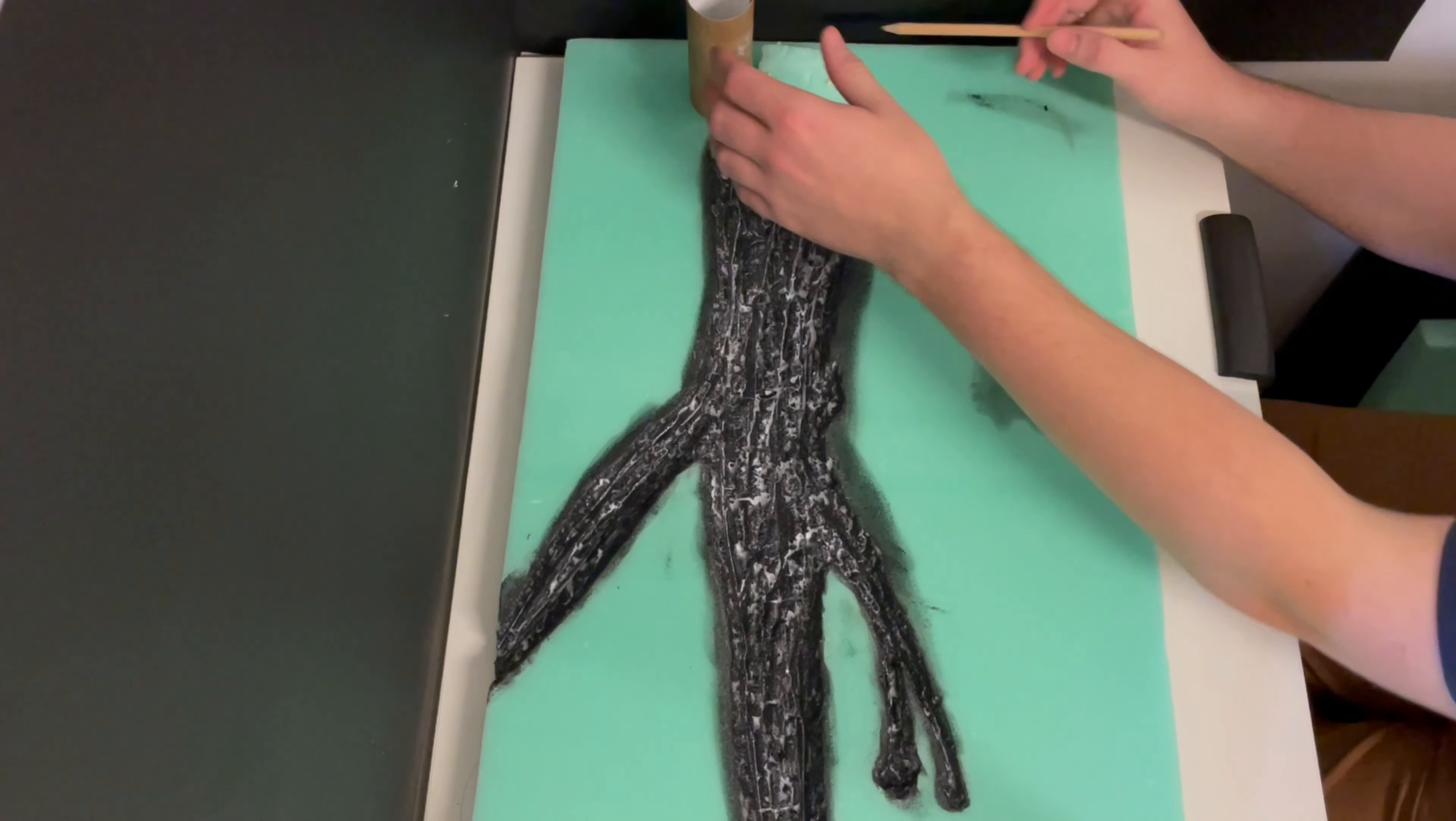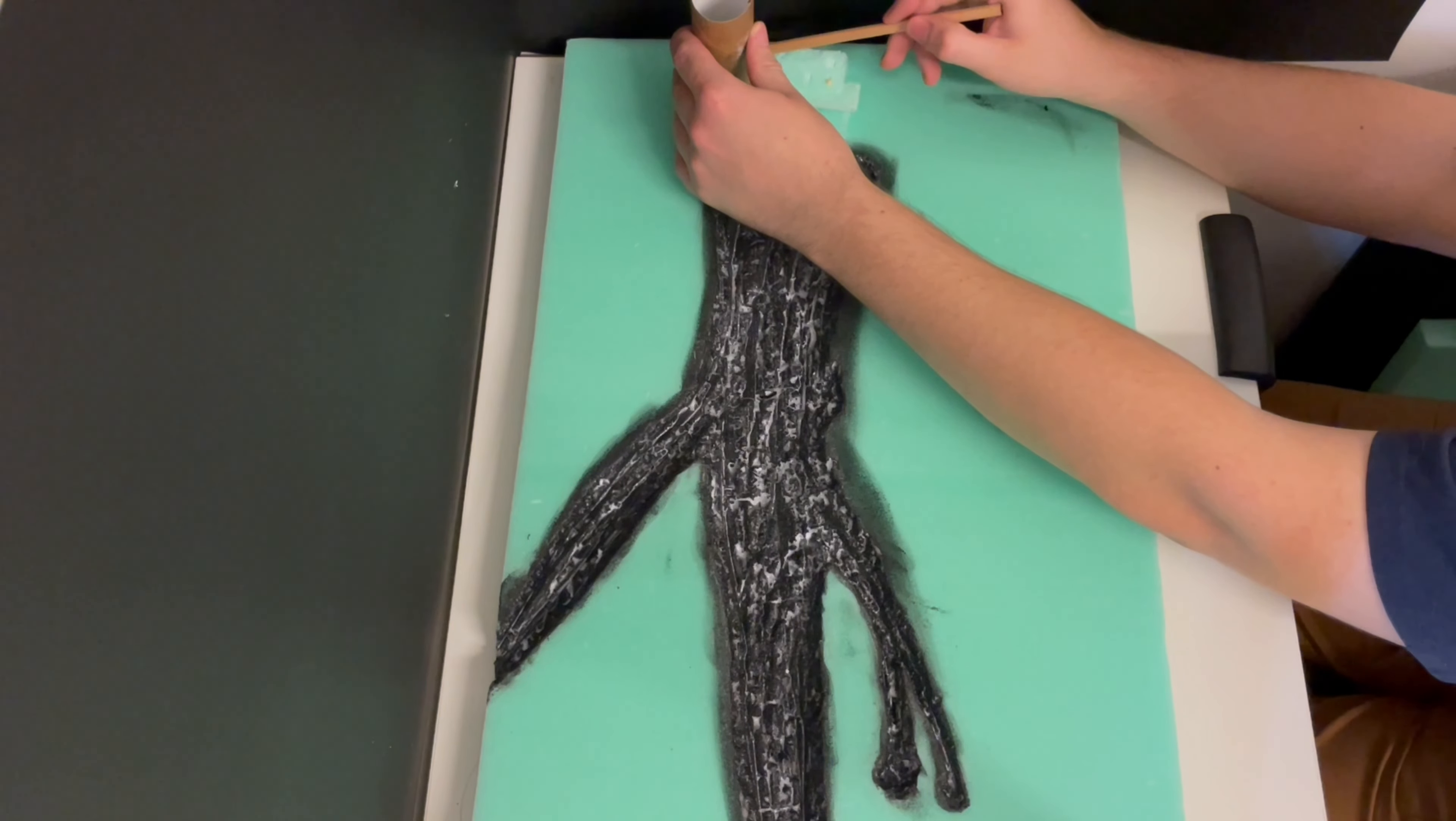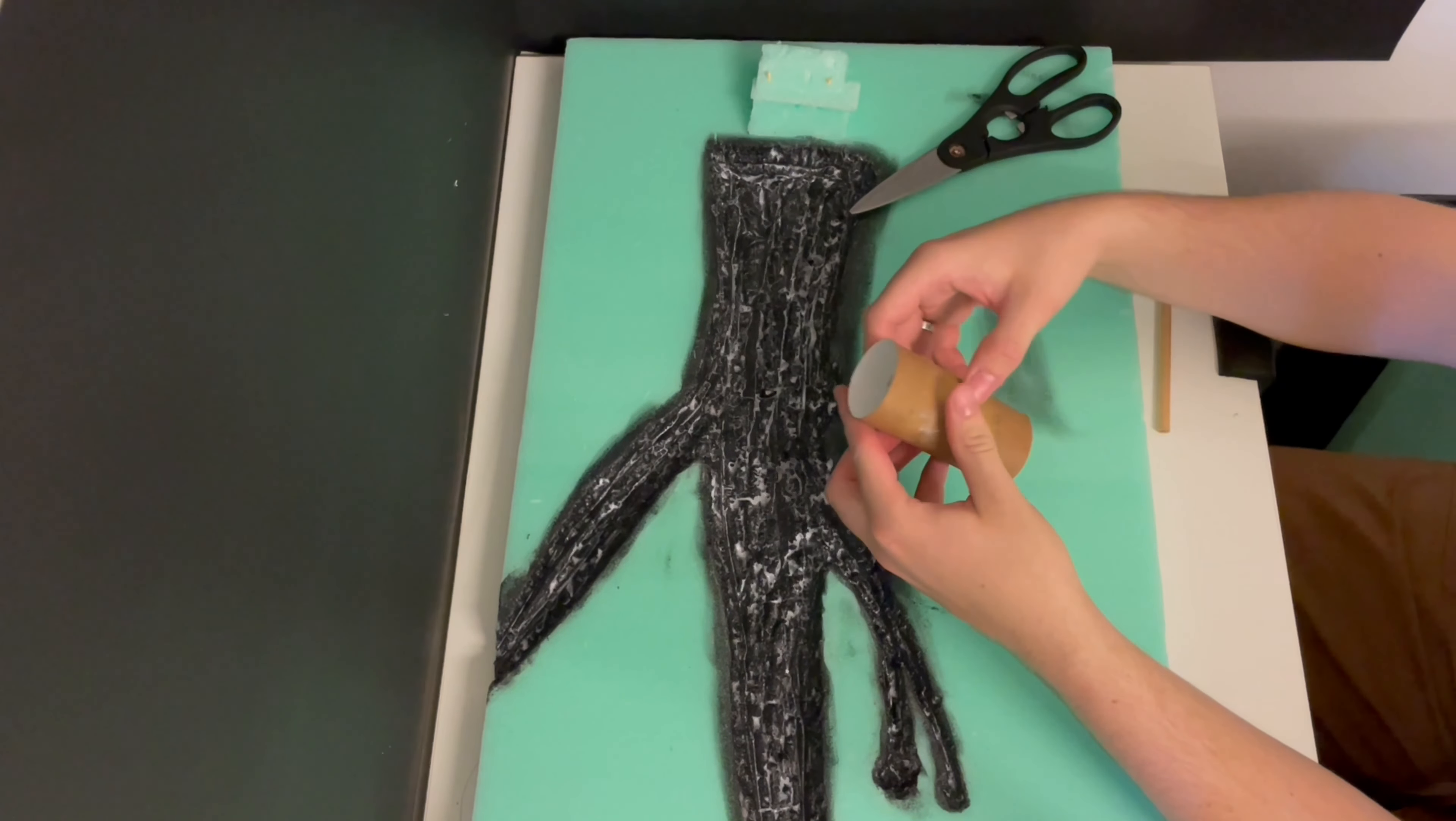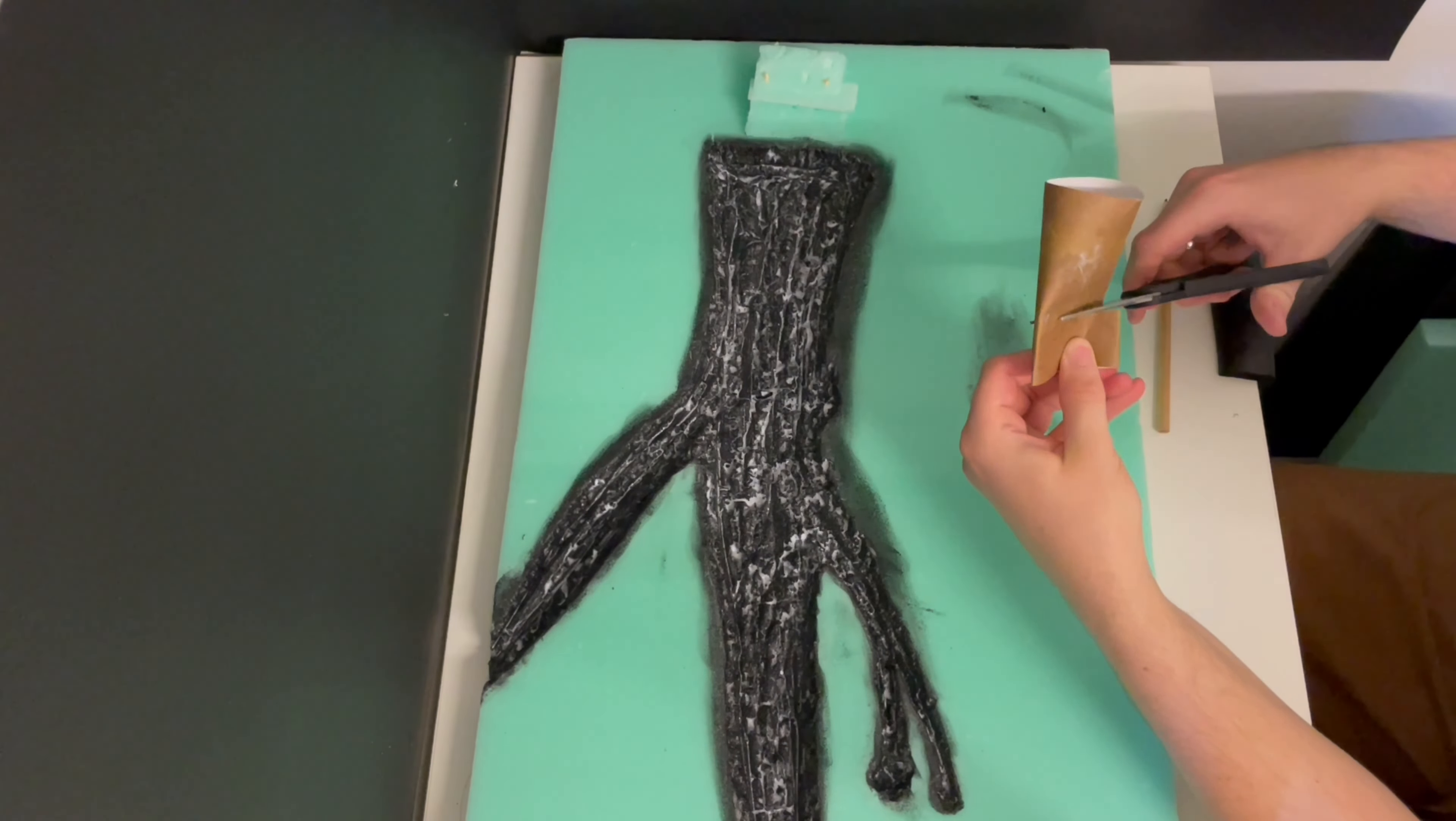While that dries, I'm going to make the lava spout out of a toilet paper roll. So I just line it up next to the foam that I glued earlier and just trace one side of it. Then I just pinch it flat and snip it into the rough shape.